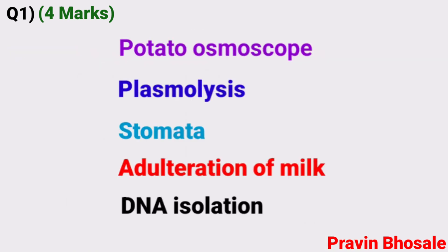So out of five practicals, you will be asked to perform one experiment. Here you are writing aim, requirement, wherever applicable, labelled diagram, observation, result, inference.